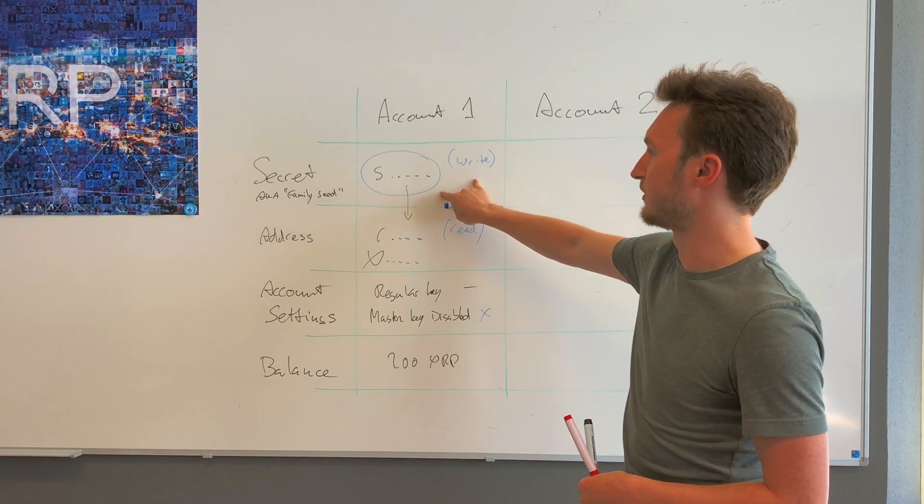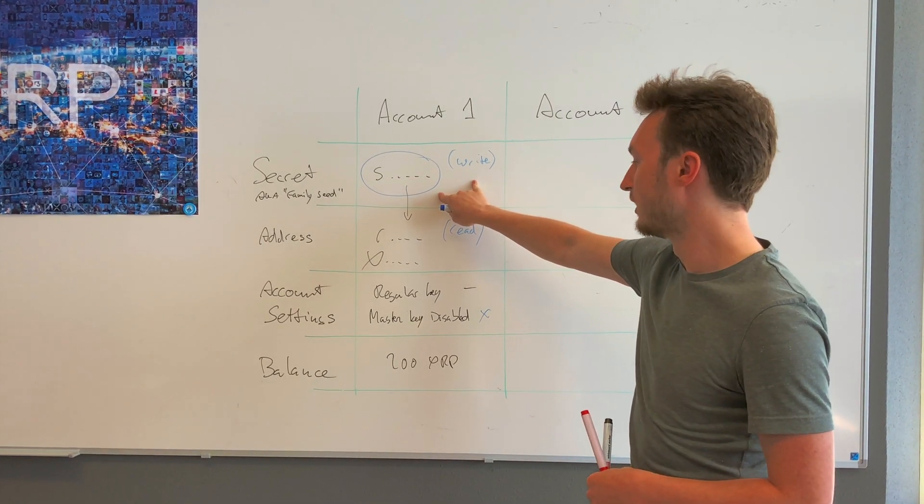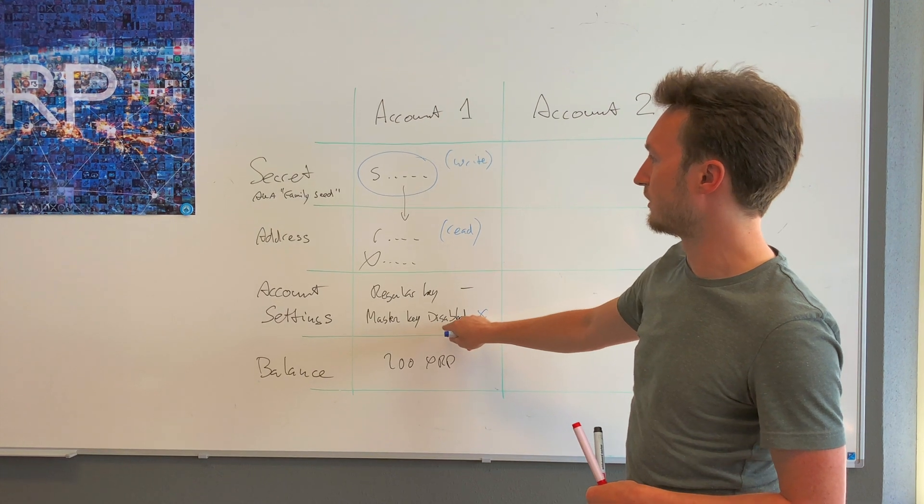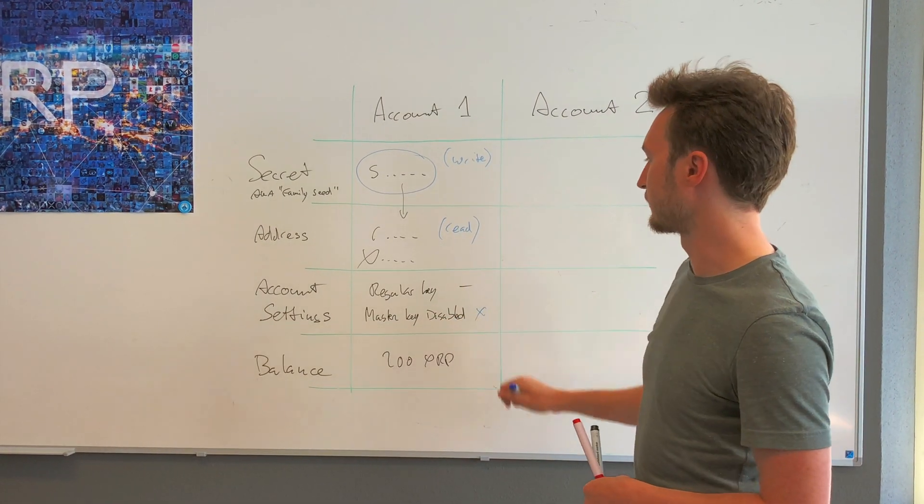The XRP ledger will prevent you from making a stupid mistake, which would be to disable the master key while you have no other key configured. So that's not possible.